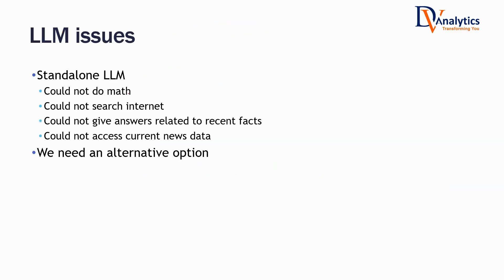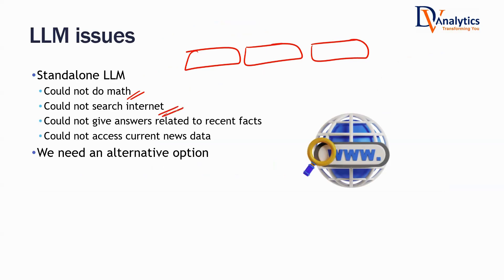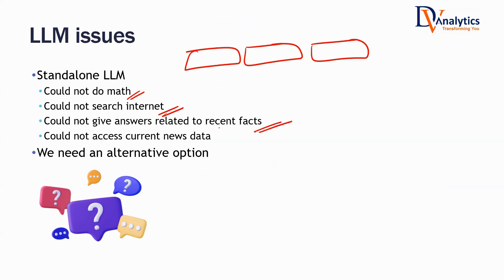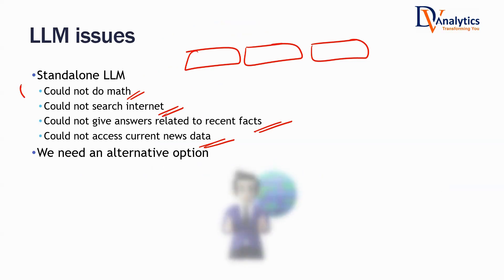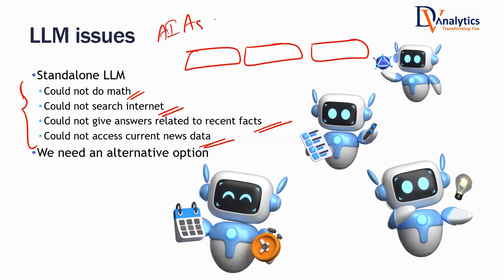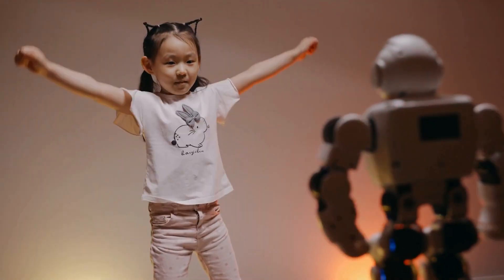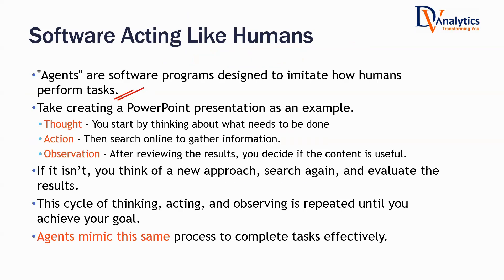A large language model cannot do mathematics — it is a next-word-generating engine, so it may not understand mathematics. It cannot search the internet; it doesn't have that ability. It cannot give answers related to recent facts or access news data. A standalone LLM is just a next-word-generating engine. We need something called AI agents — software programs designed to imitate humans.